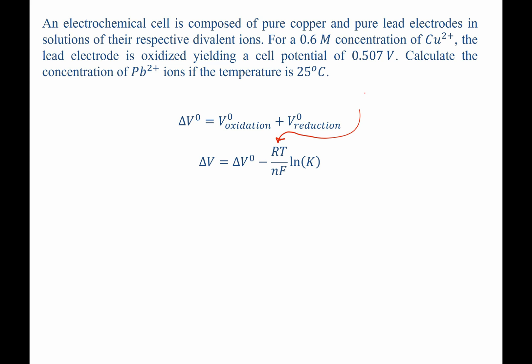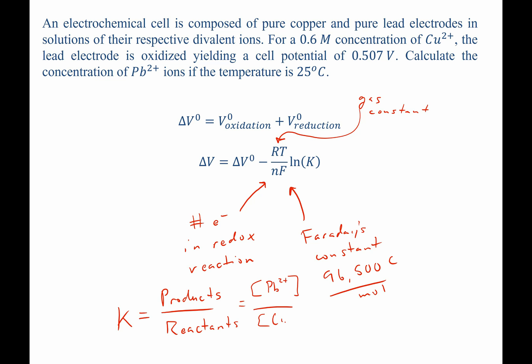R is our gas constant. T is the temperature. N is the number of electrons in the redox reaction. F is Faraday's constant, which is 96,500 coulombs per mole. K is our reaction quotient, which is products over reactants. In this case, that's the concentration of lead 2 plus ions over the concentration of copper 2 plus ions.